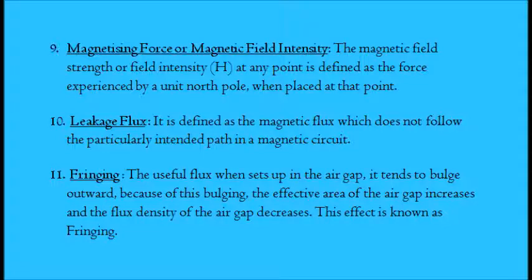11. Fringing. The useful flux when sets up in the air gap, it tends to bulge outward. Because of this bulging, the effective area of the air gap increases and the flux density of the air gap decreases. This effect is known as fringing.